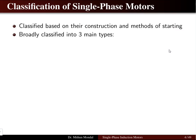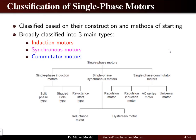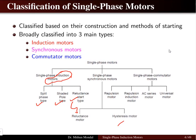Single-phase motors are broadly classified into three main types: induction motors, synchronous motors, and commutator motors. Induction motors include split-phase, capacitor start, and reluctance start types. Synchronous motors include reluctance motors and hysteresis motors. Our lecture series will generally focus on single-phase induction motors, and later we will take up synchronous motors.